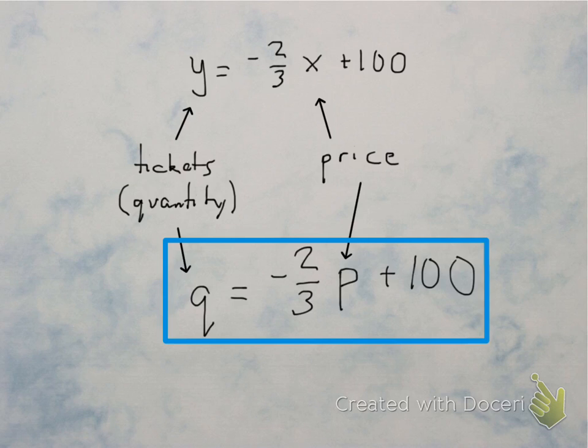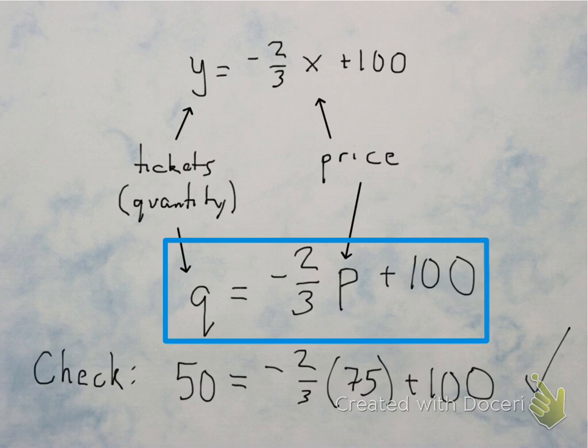Now it's probably a good time to check whether or not your answer is correct. And the way you do this is by plugging in one of the numbers that they told you. If you remember, if you sold the tickets for $75 each, you would sell 50 tickets. So if you plug in 75 for P, you get 50 for Q. So that's how you check it.